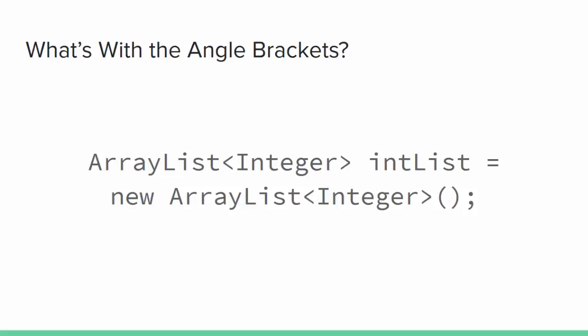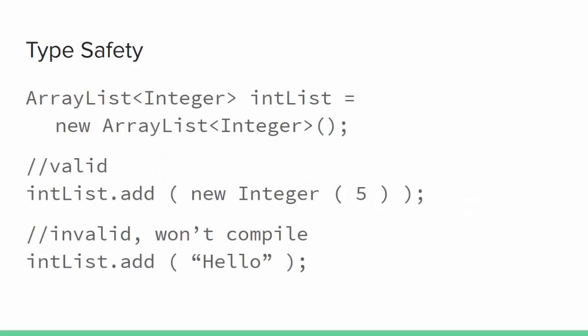The declaration and assignment might look like this: ArrayList of Integers IntList equals a new ArrayList of Integers. The reason for specifying the particular type of object that's allowed in the ArrayList is so the compiler and runtime environment can enforce type safety. Only objects compatible with the specified type can be added to that ArrayList.